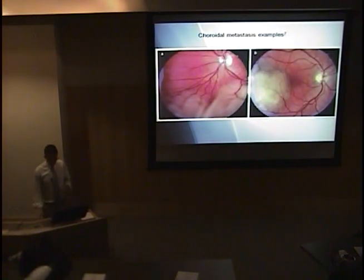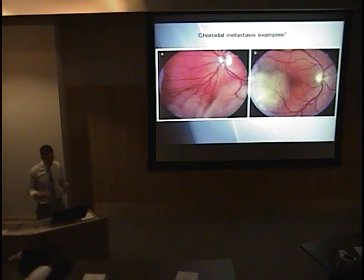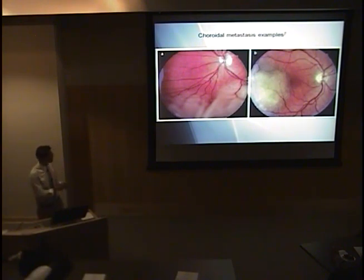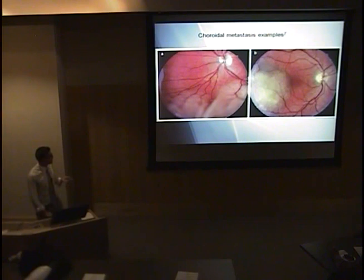On exam, the lesions can be either flat or plateau in shape. You can see the cream-colored versus yellow appearance in the lesions here, and then some element of serous retinal detachment on the left side of the picture.